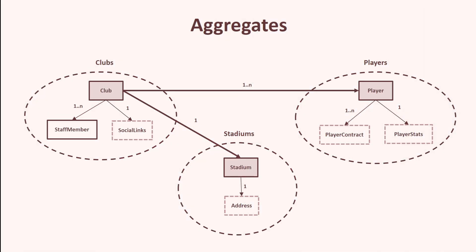Next we have aggregates. An aggregate is a cluster of related entities and value objects, and they are all treated as a single unit. In this example we have three aggregates: clubs, players, and stadiums. All these aggregates have their own entities and value objects inside.